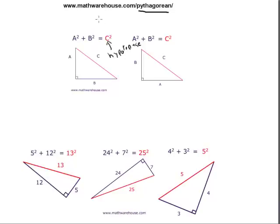All you have to remember is: on one side of the equal sign is the hypotenuse squared, and on the other side is a squared and b squared — the two other sides squared. It doesn't matter which goes first. If you look at the picture, you can see that the red line, the hypotenuse, is the biggest line — larger than a and b — so you'd expect it to equal the sum of the squares of the other two sides.